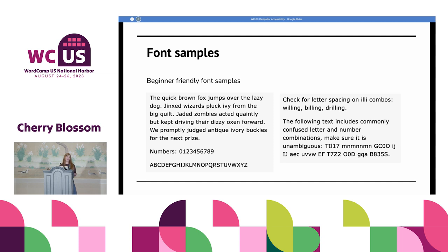It's also important to check for ambiguous letters — things that look like other letters. For example, I, L, and 1. These three look very similar to each other, but some fonts allow easy differentiation. Here I have Verdana, and you can see that the capital I, the lowercase l, and the number 1 are all different.